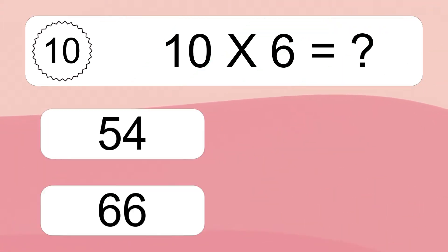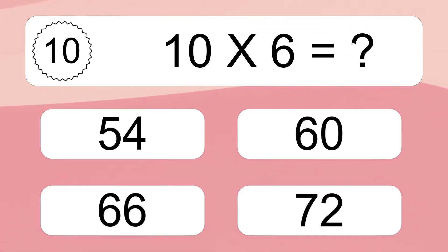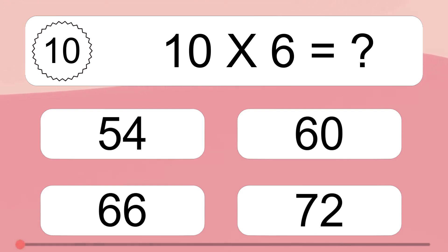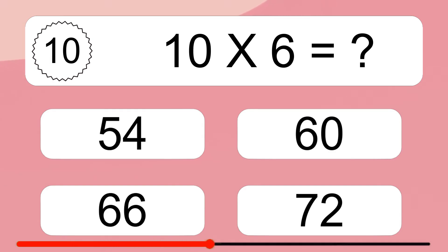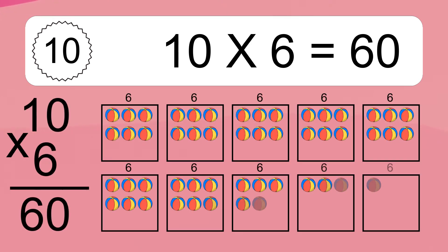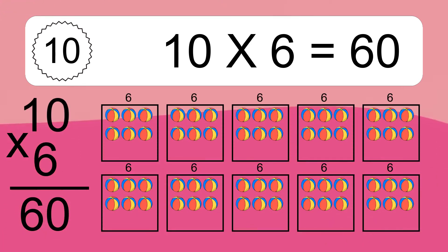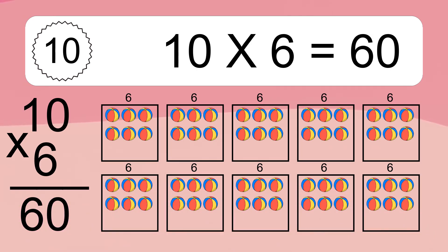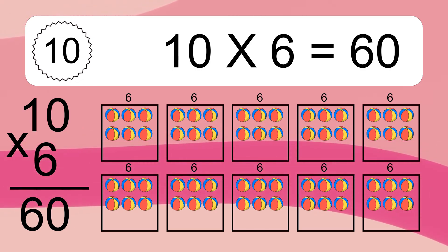10 times 6 equals what? 10 times 6 equals 60. We have 10 boxes, and each box has 6 colorful balls inside. If you count all the balls in all the boxes together, you will have 10 times 6 balls. This equals 60 balls.